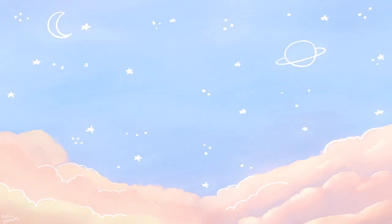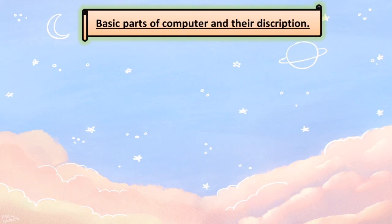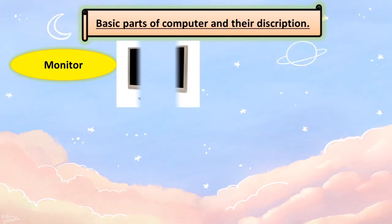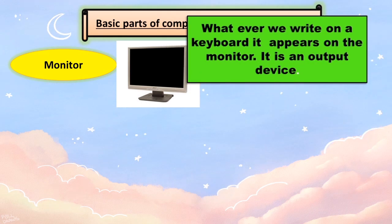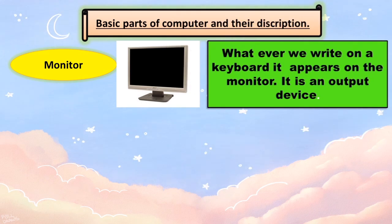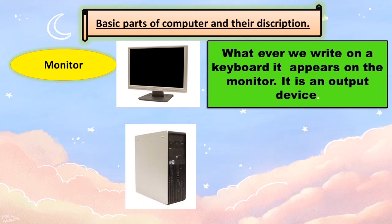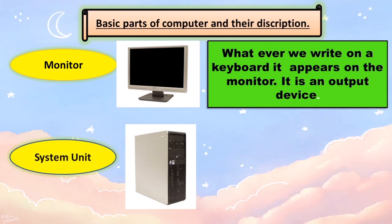Now, the basic parts of a computer and their descriptions. The first one is the monitor. Here we have the picture of a monitor. Whatever we write on a keyboard, it appears on the monitor.